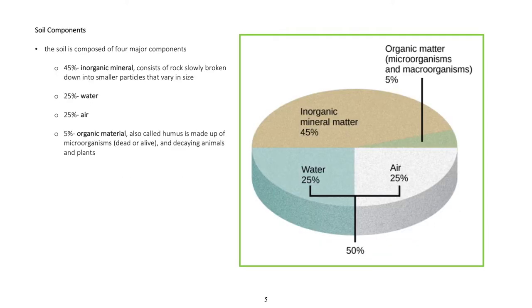Soil components. The soil is composed of four major components: 45% inorganic mineral consists of rock slowly broken down into smaller particles that vary in size.